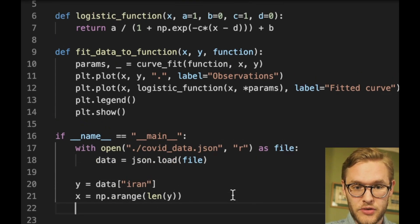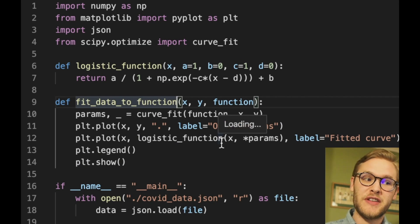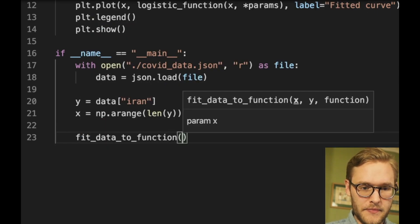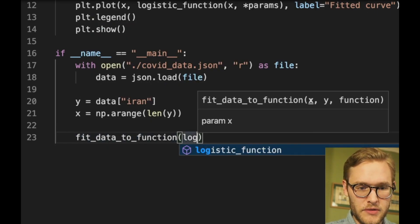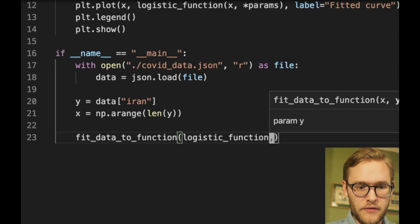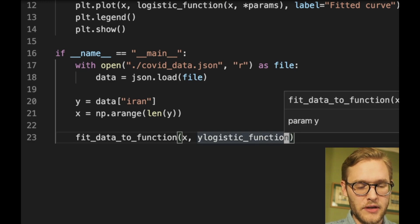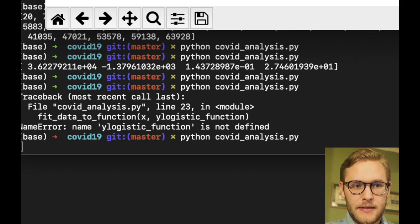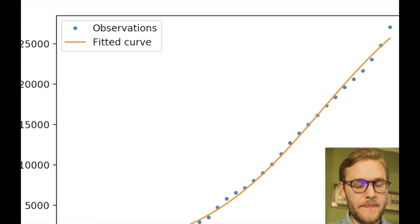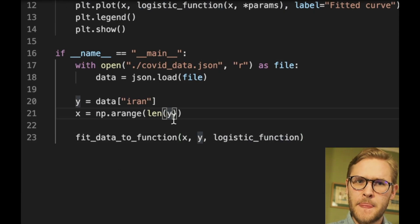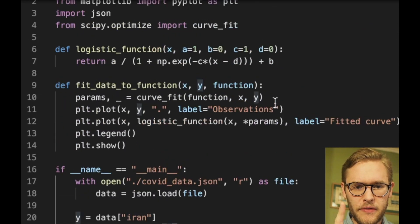So first we open some data, and then we call our function fit_data_to_function. Let's see if it works. First we call fit_data_to_function. We need a function which will be our logistic function. We need an x and a y and a function. As you can see it's the same figure. So now let's try to do the same thing.